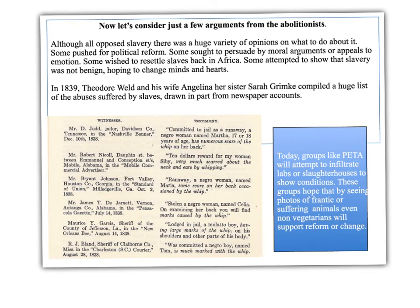Now let's take a look at the abolitionist arguments. I think this is something you probably covered in many of your history classes. But I want to stress that even within the anti-slavery or abolitionist movement, there were many factions that took different positions. Some wanted political reform. Some wished to persuade slave owners to give up their slaves through moral argument or appeals to emotion and reason. Some wished to free slaves and take them back to Africa.